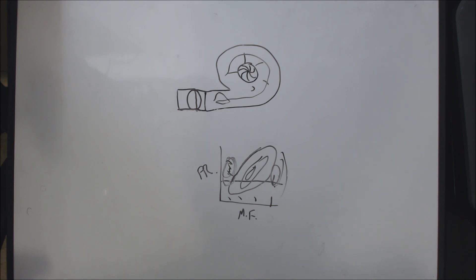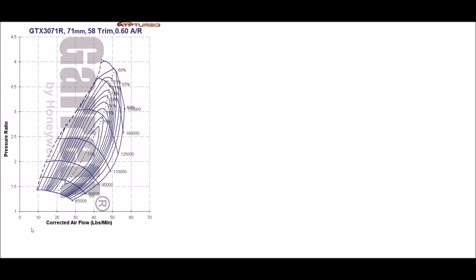This is the basics of how compressors are tested and how compressor maps are made. And back to the video. So to read this, we can calculate the mass flow rate of our car and we can determine our pressure ratio by using this equation, where I say the boost pressure plus the atmospheric pressure divided by the atmospheric pressure.